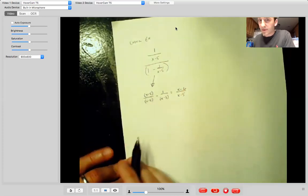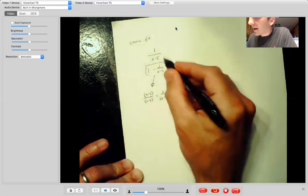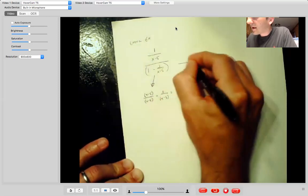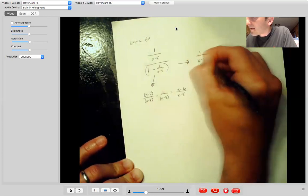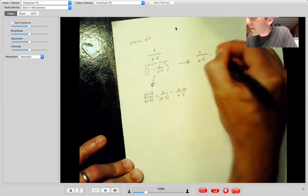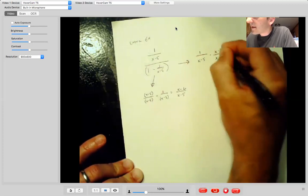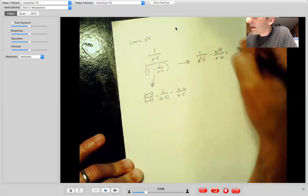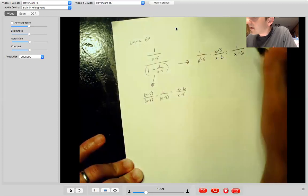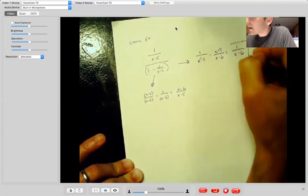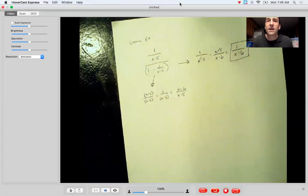I'm not sure why I did all the parentheses there. You don't really need them. And then, so now I have this over this. So one over X minus five times X minus five over X minus six, these two cancel. And then I have one over X minus six. All right. So I'm going to go ahead and stop with examples there.